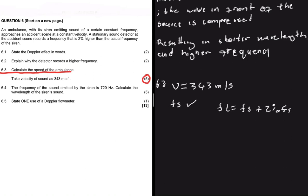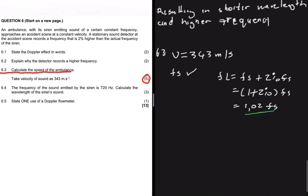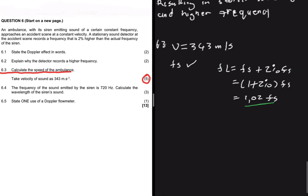FL is exactly 2% higher than FS. If we take FS as a common factor, we get FL = (1 + 2%) × FS, which equals 1.02 FS. So FL = 1.02 FS. This is actually the difficult part of the problem — if you manage to figure this out, you are essentially done.